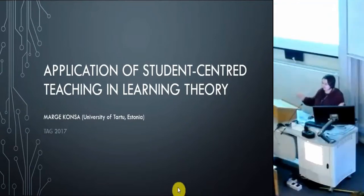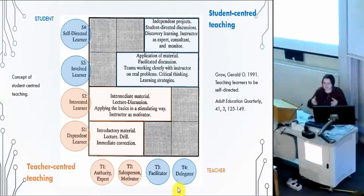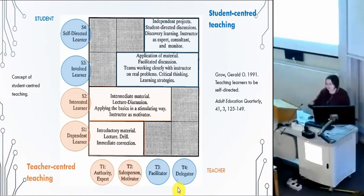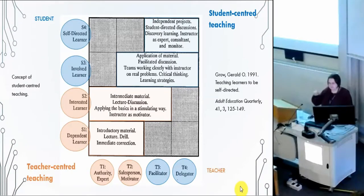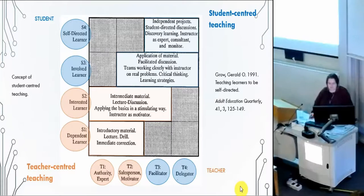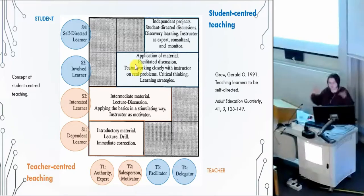I'm starting with a little bit of theory. My approach to student-centered teaching is based on Gerald's GROW paper, or his model. He's an adult educator from the United States, from Florida. His model is based on dividing teaching into four levels, and also learning into four levels. Some of those levels — like the red ones — are more teacher-centered teaching, and the blue ones are more student-centered teaching.